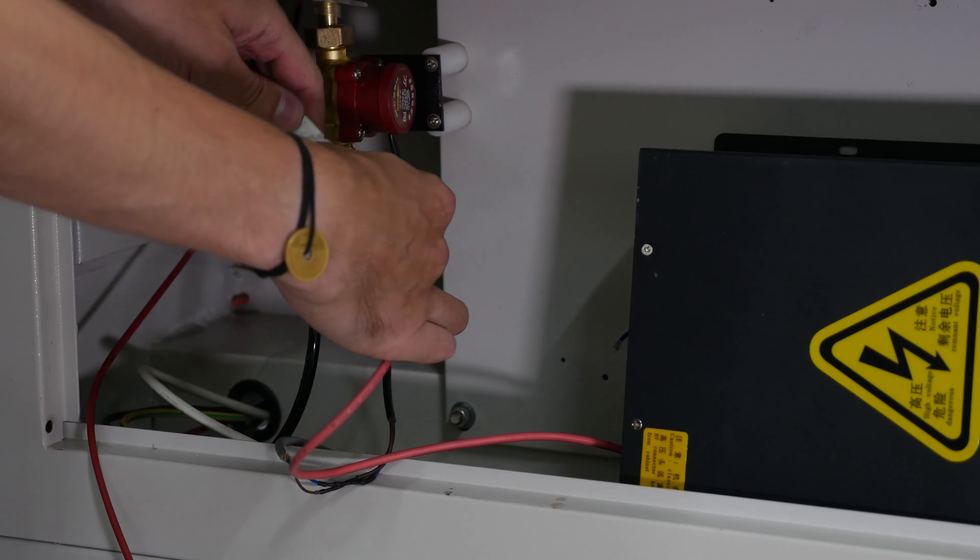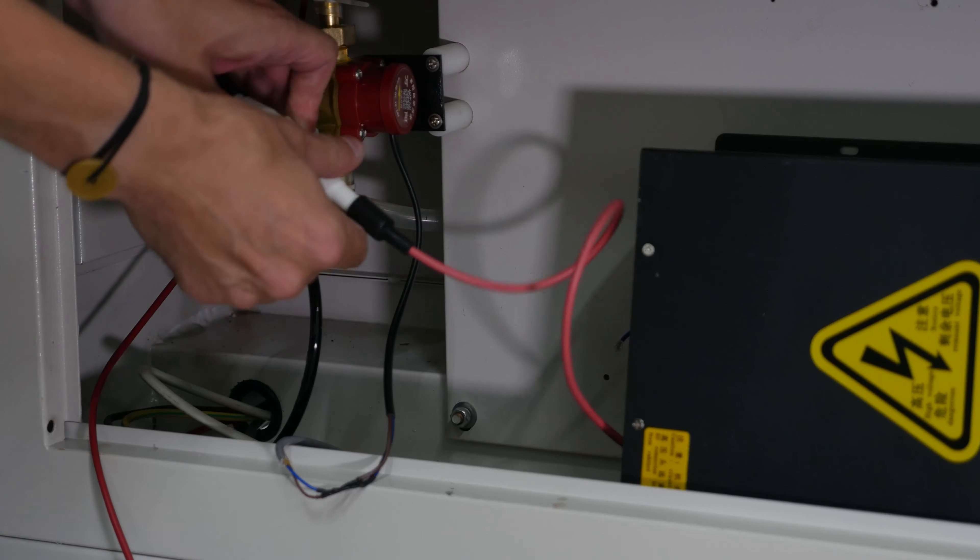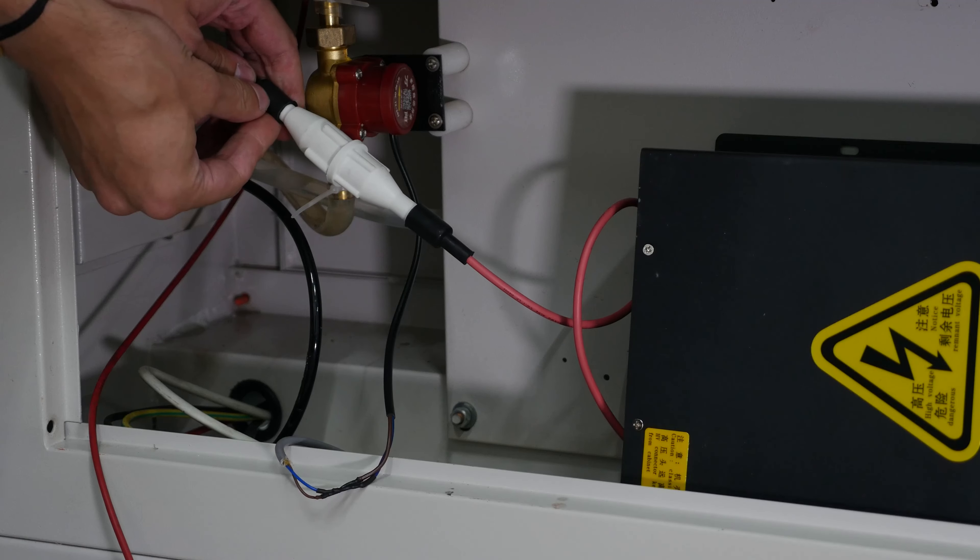Connect the high voltage cable terminal that goes to the anode of the laser tube to the high voltage unit terminal.